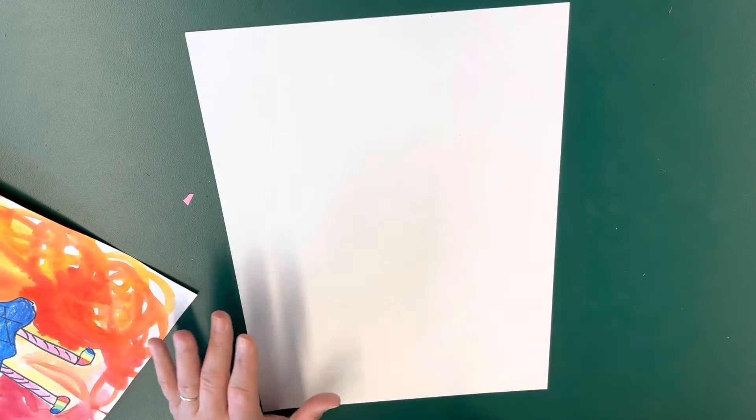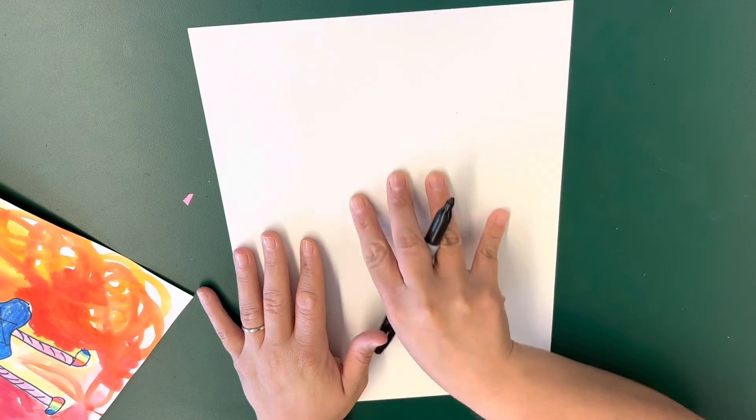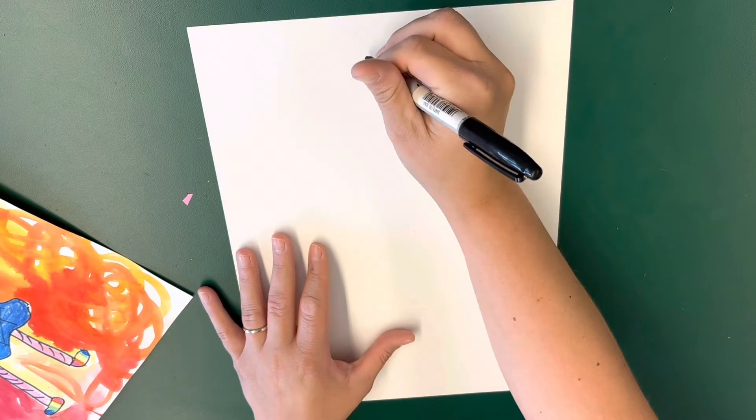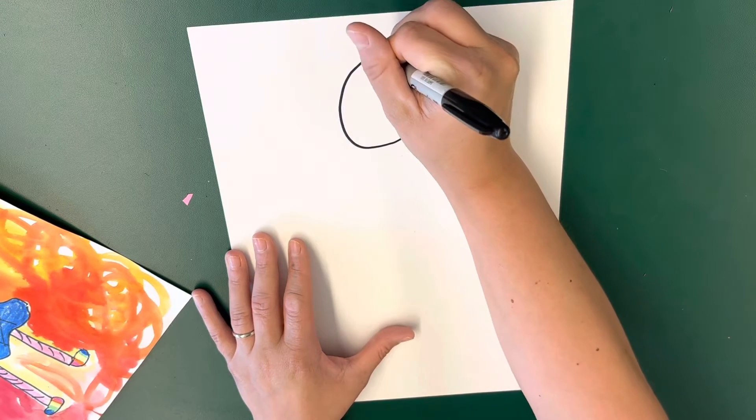So what you're going to do first is we're going to start with the head, and it's going to come up a little bit below the top of the paper, and that's going to be an oval. Remember you don't want to draw too small.